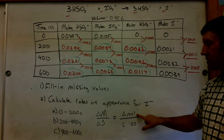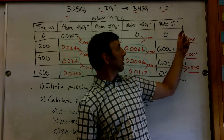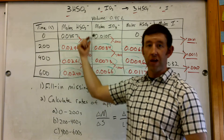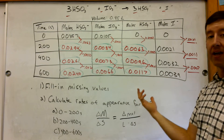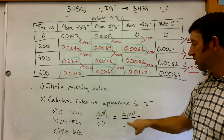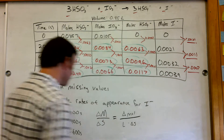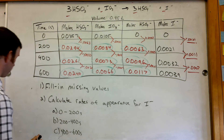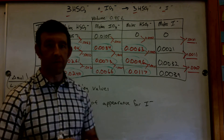What's my change in moles? We get that from our table. We're just going to do it for the iodine ion for this particular question, though we could do rate of disappearance for any of the others now that we can fill in all these values. So again: change in moles divided by liters times change in seconds. I'm going to write this formula over here for reference.